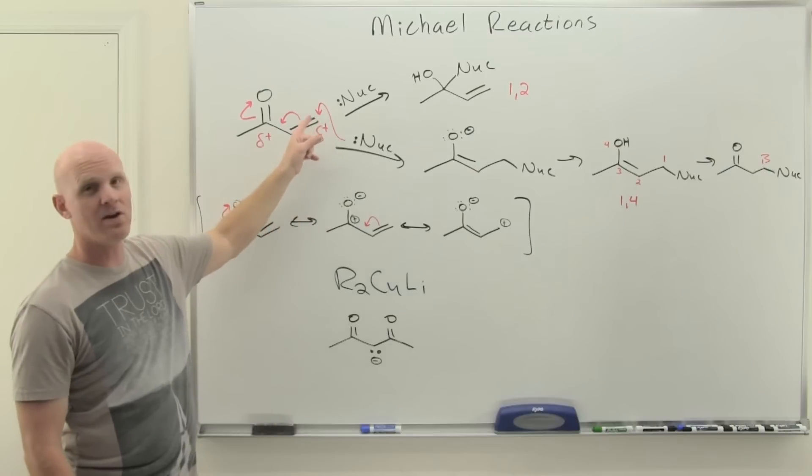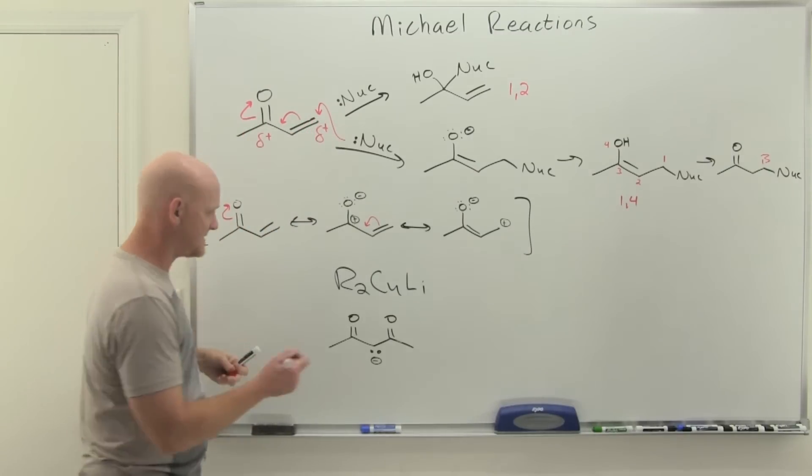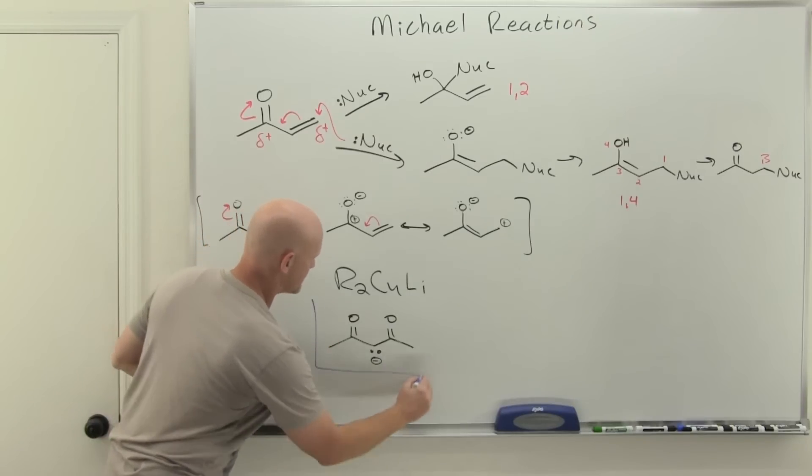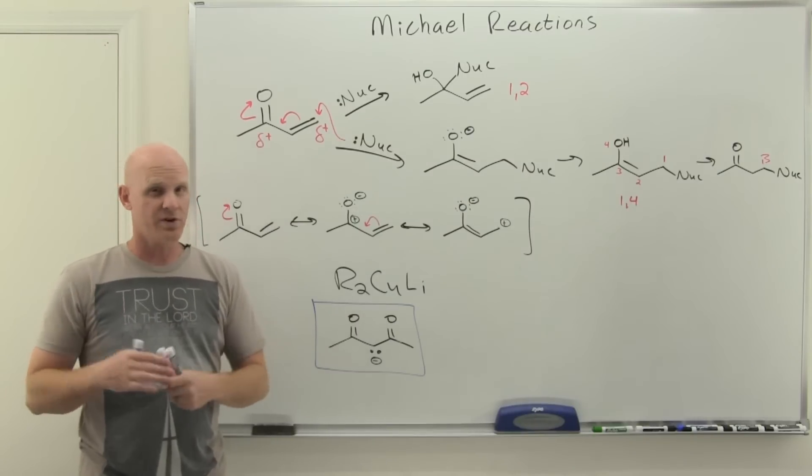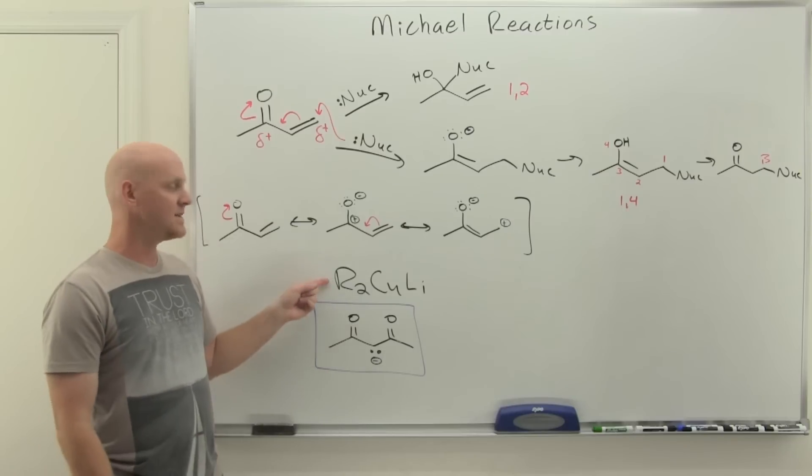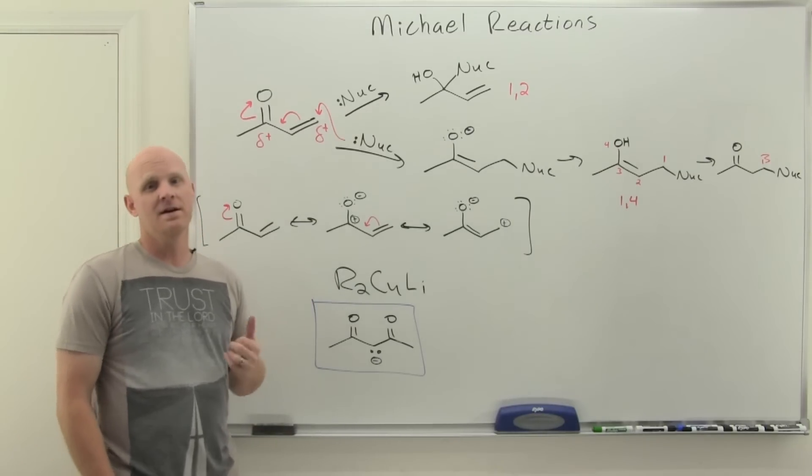The enolate of a beta dicarbonyl, if you will. Sometimes you'll see it presented where one of these is actually replaced by an electron-withdrawing nitro group, but this is the most common Michael donor here. You should also recognize that our organocuprates are good Michael donors as well. Hands down, this is your most common Michael donor right here—the enolate of a beta dicarbonyl.